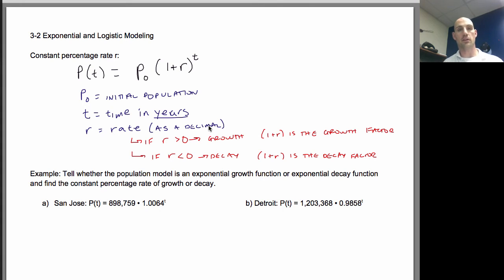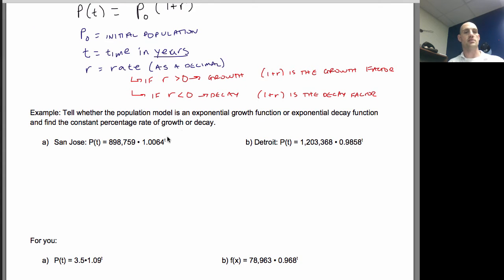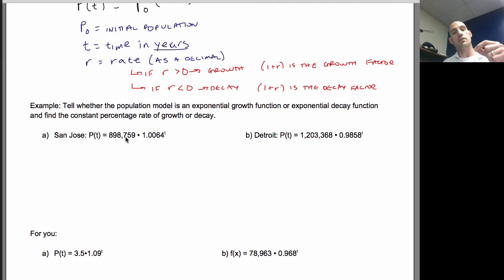So that's the basics. Let's look at a couple of models of this or a couple of problems that have to do with this. It's asking us to tell whether the population model is an exponential growth function or decay function and find the constant percentage rate of growth or decay. So a couple of things here. Is it growing or shrinking? And what's the rate? So the population of San Jose is equal to 898,759 times 1.0064 to the T. The equation that I'm looking at is P(t) is equal to initial population times 1 plus R to the T. So whatever I'm multiplying by, this is my initial population.